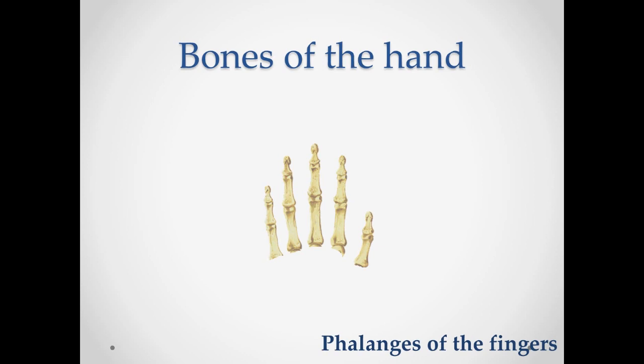Finger bones. They are short and include five fingers. Each finger, except the first, has three phalanges: proximal, distal, and middle. The thumb has only two — proximal and distal.